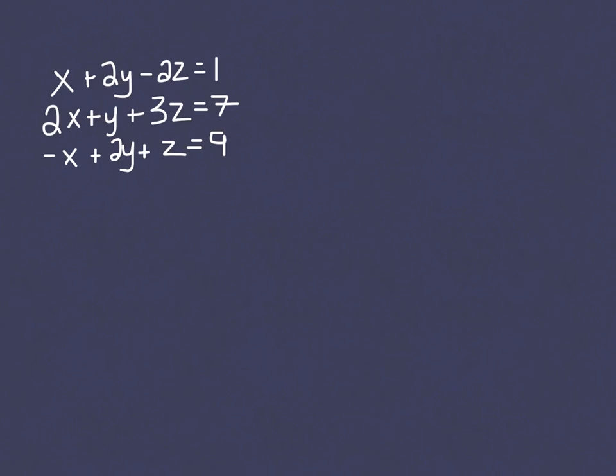The general idea is that you pick a variable to isolate in one of your equations, typically a variable with a coefficient of 1. You then substitute the expression on the other side into the other two equations, leaving you with a two equation, two variable system that you can solve using any method you'd like.